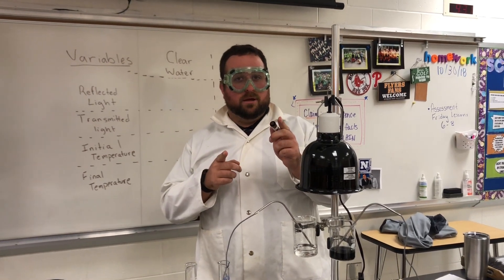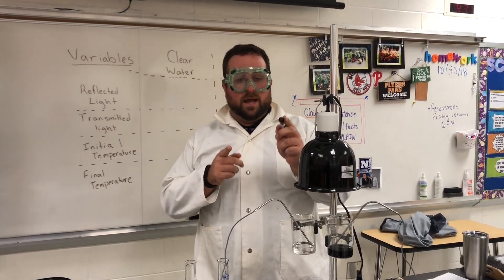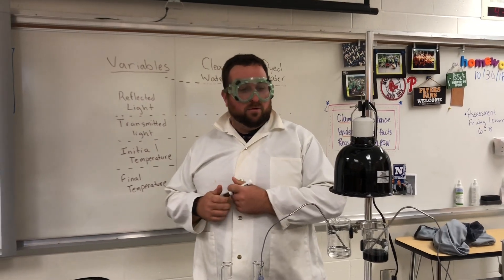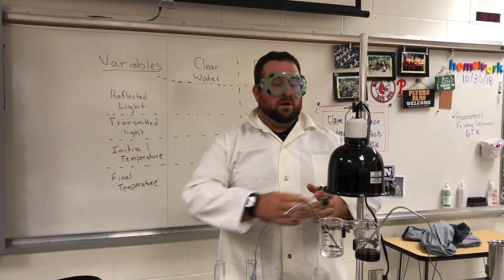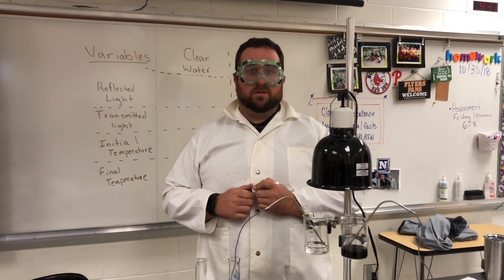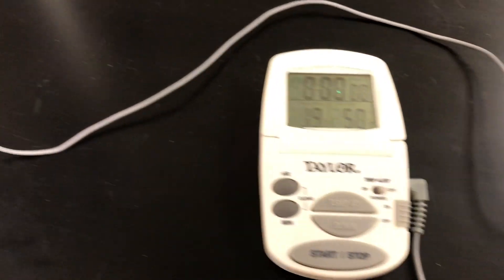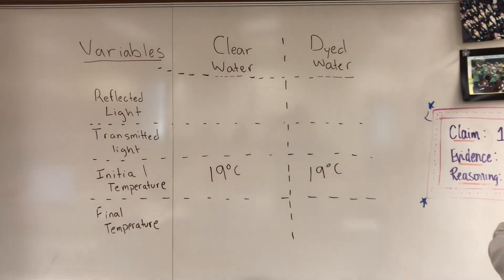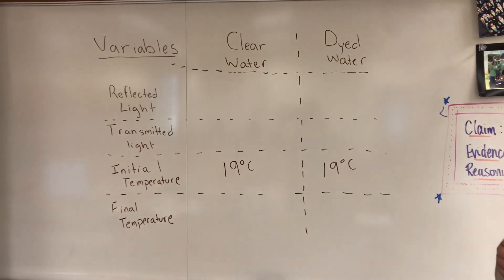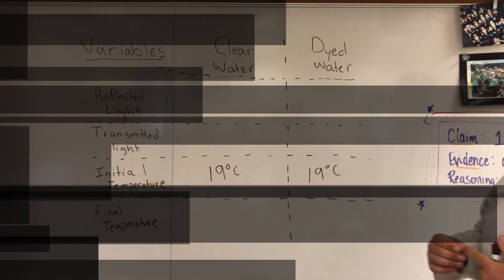Let's take initial temperatures for our clear and our dyed water to see how hot they are before the light strikes them. We have 19 degrees Celsius for our clear water, and we also have 19 degrees Celsius for our dyed water. We have the same initial temperature, brought to you by our Taylor temperature gauges.